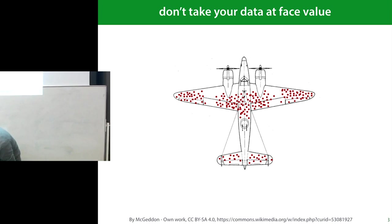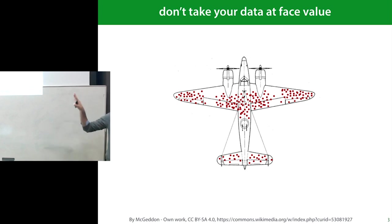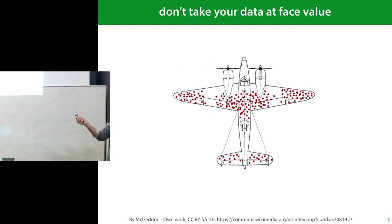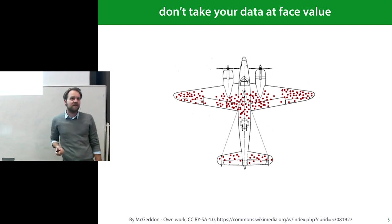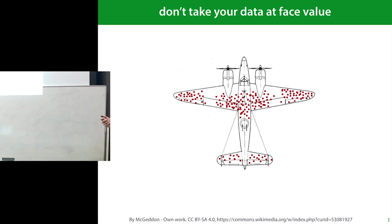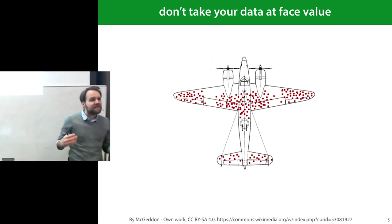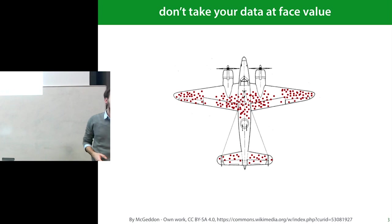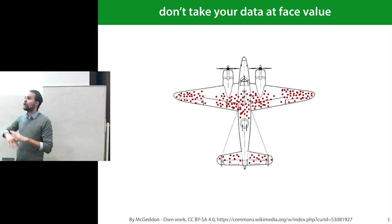Until one of the statisticians — I wrote it down this time — called Abraham Wald, who studied this, said: well, that's not what we should do, because we don't have the full picture here. We're not seeing where all the planes are getting shot. We're seeing where all the planes are getting shot that came back. So these are all the places where a plane can be shot and still come back. The places we should reinforce are the places where we don't see a dot, because the real distribution of bullet holes on the plane will be uniform, which means that if a plane gets shot in the nose, it will not come back.